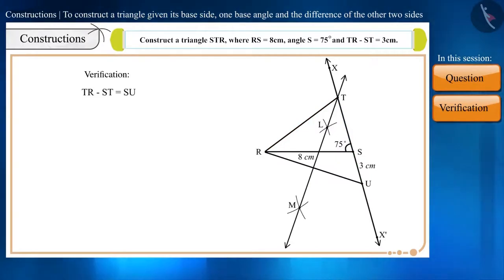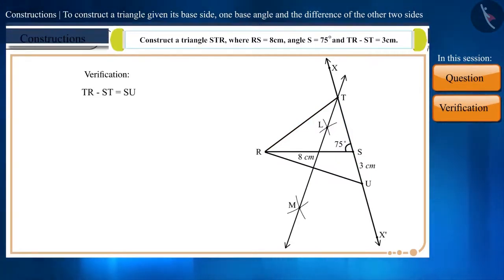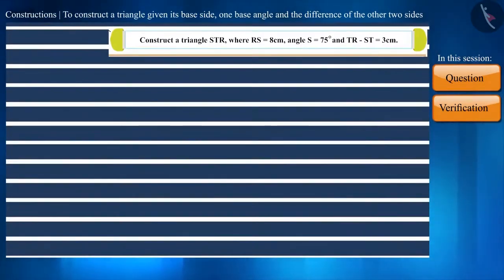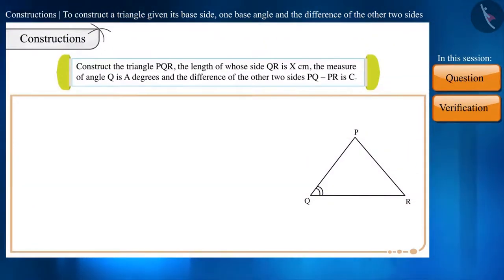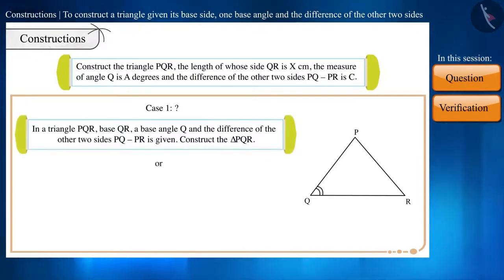So that's all in this session. But before leaving, try to answer one question. Construct the triangle PQR, the length of whose side QR is X cm, the measure of angle Q is 8 degrees, and the difference of the other two sides PQ minus PR is C. Here, we will do the construction of a triangle keeping in mind case 1 or case 2.